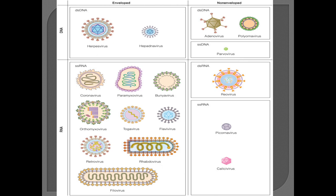On the top left, the double-stranded DNA enveloped viruses can be seen. On the top right, there are non-enveloped double-stranded and single-stranded DNA viruses. On the left side, the single-stranded RNA enveloped viruses, and on the next section, non-enveloped double-stranded RNA and single-stranded RNA viruses. You can take a screenshot or pause the video to see it more clearly.